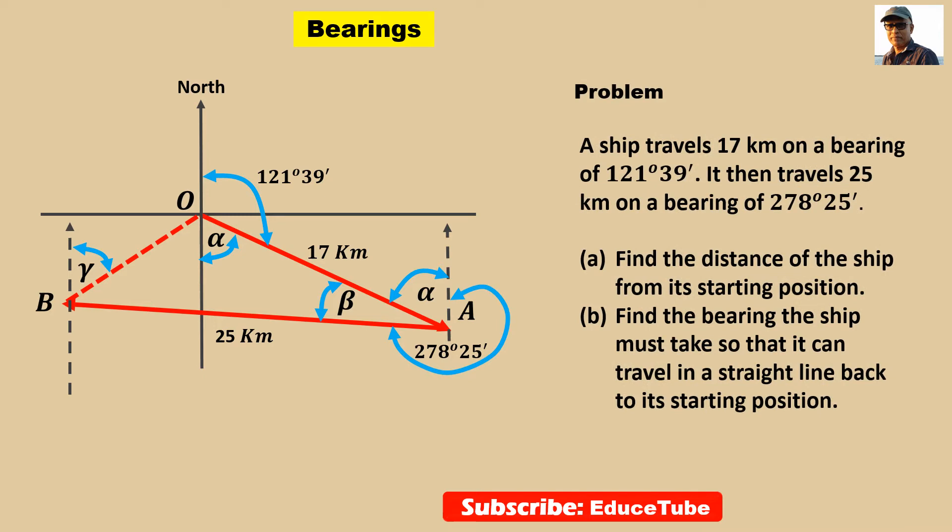Here I have taken a problem which says a ship travels 17 kilometers on a bearing of 121 degrees 39 minutes. So this is the starting position. As we know, bearings means from north direction, we take this 121 degrees 39 minutes clockwise. And then it will be the OA bearing. And this distance is 17 kilometers.